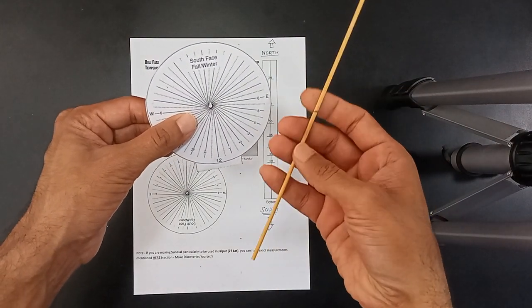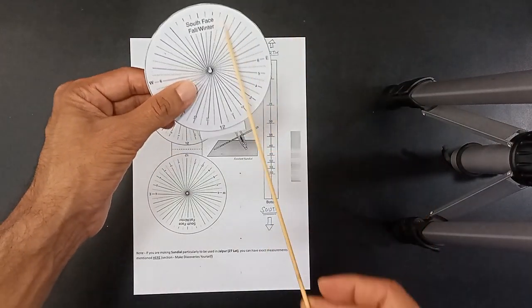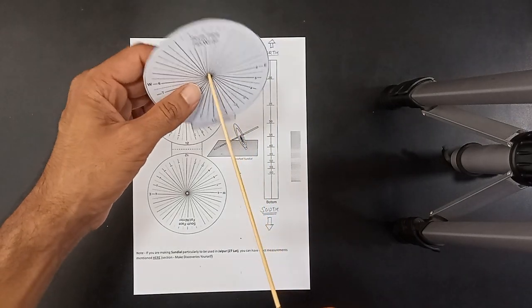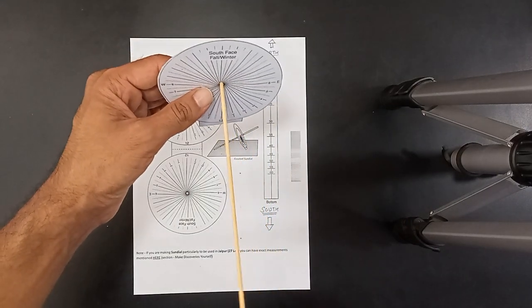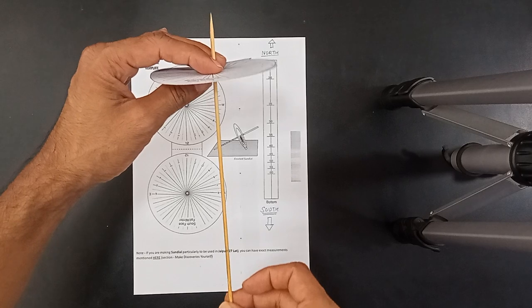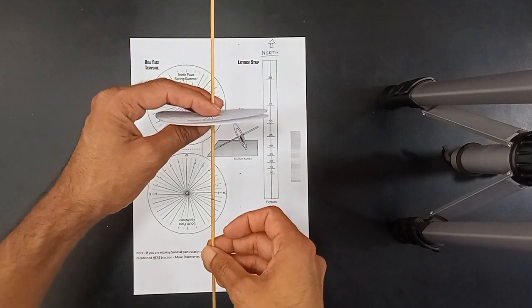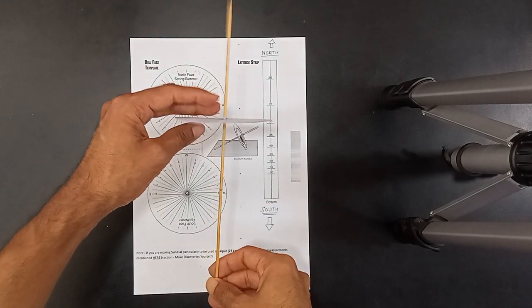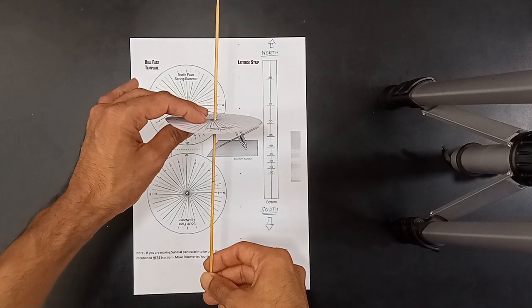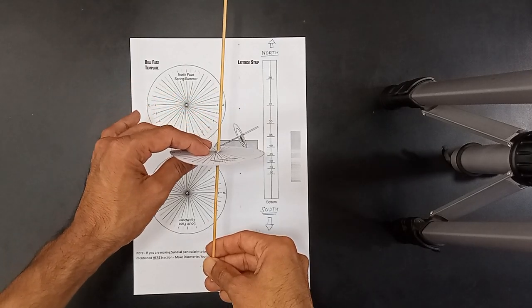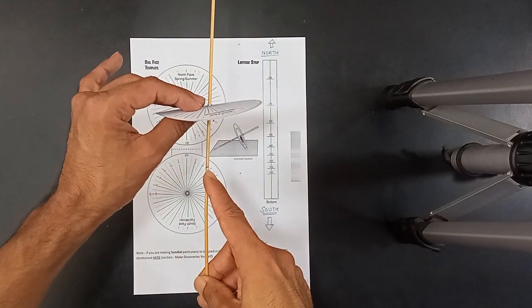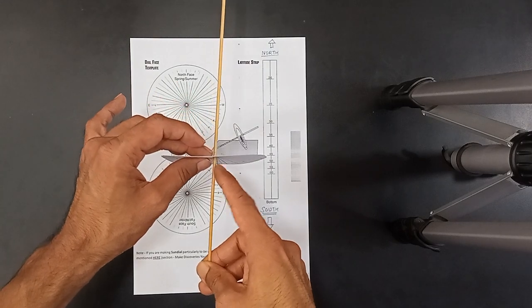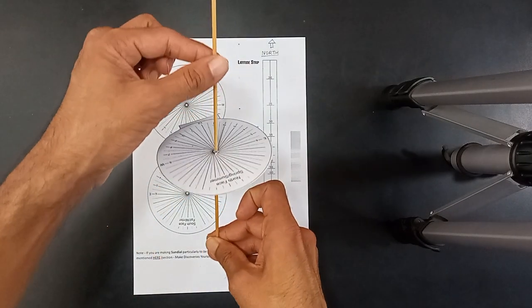You take that stick which you just marked, take that stick and punch a hole through it. Put it in from the south face so that it comes out from the north face like this. You slide these circles to the mark which you have made earlier. See, here is the mark. Slide it up till here like this. This is your sundial ready to be used.